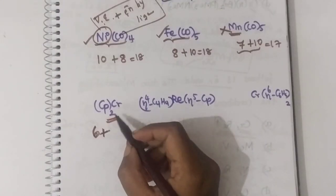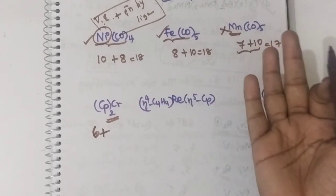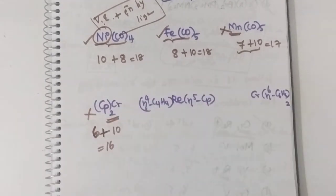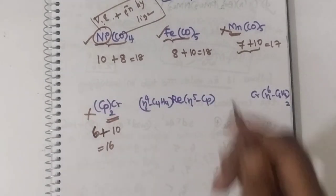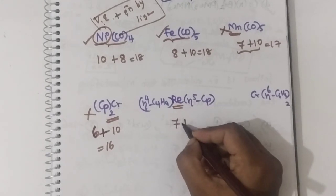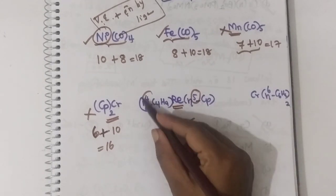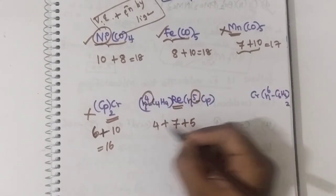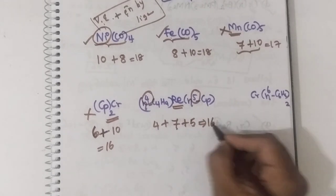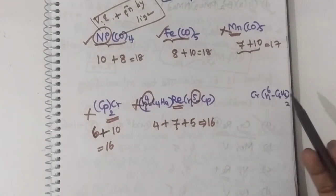Chromium with two Cp ligands: chromium has 6 valence electrons and one Cp ligand can donate 5 electrons. With 2 Cp ligands that is 10 electrons. So total is 16 — this is not stable. For the manganese complex with η5 and η4 ligands: 7 + 4 + 5 = 16. This is also not stable because it does not obey the 18 electron rule, having only 16 electrons.